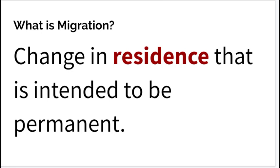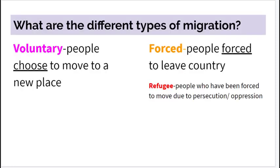Before we get started, let's flashback a little and define migration. Movement is one of our five themes of geography. When looking at migration, we distinguish it from cyclical or periodic movement — migration carries a degree of permanence. It's a change of residence intended to be permanent. We can look at two different types: forced and voluntary migration.